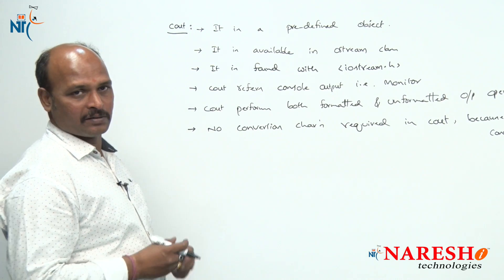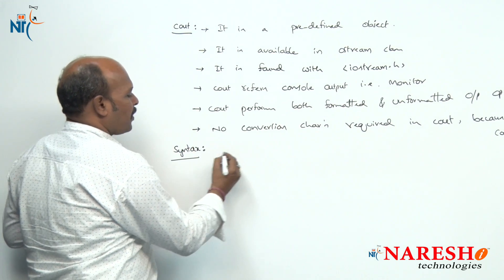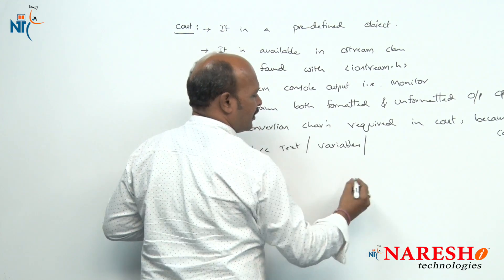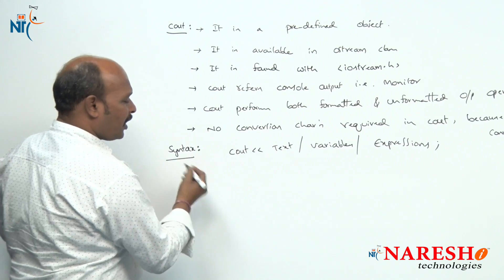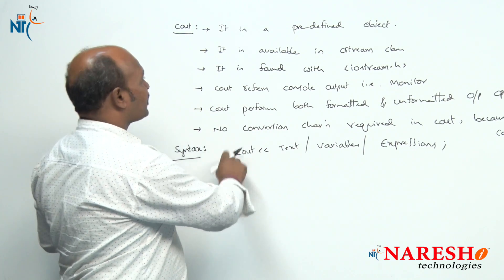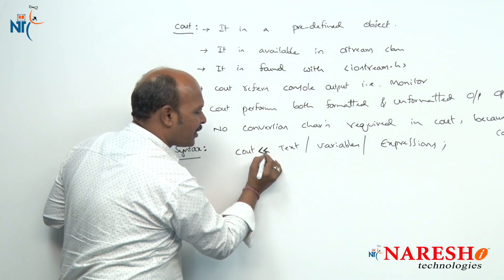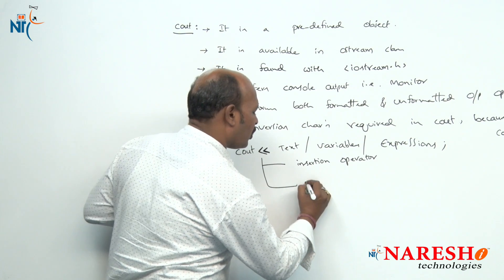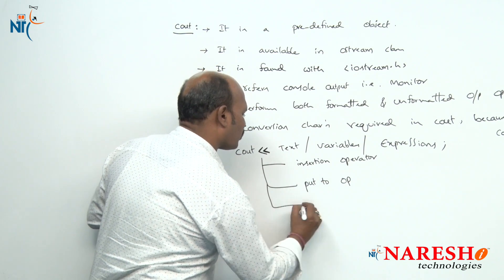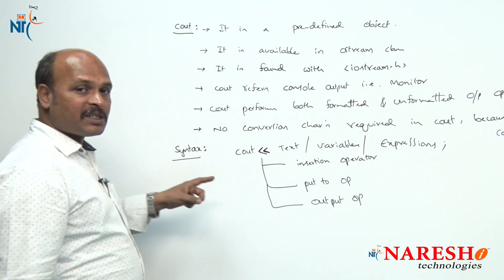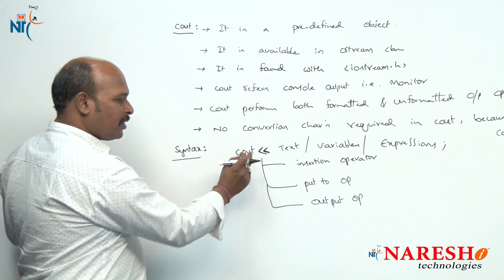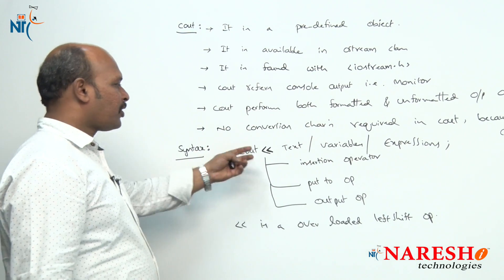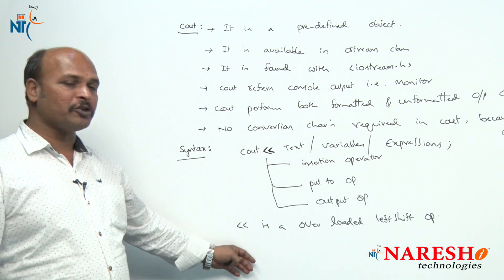Now let's see how cout works. The syntax is: cout followed by << (less than less than). The << operator is called the insertion operator, also known as the 'put to' operator or output operator. It is an overloaded left shift operator — the same << used in bitwise operators is reused here with cout.